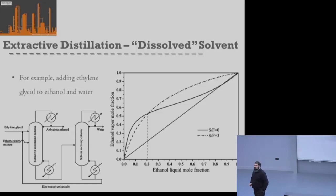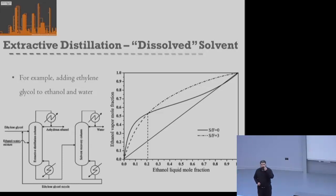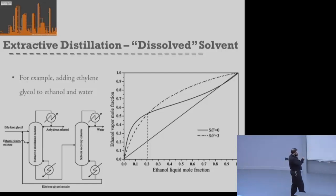So we add ethylene glycol into our first column, separate ethanol and water using the new dashed equilibrium, and get pure ethanol at the top. At the bottom we collect water and all the ethylene glycol solvent. Because water and ethylene glycol have different boiling points and no azeotrope between them, a second distillation column recovers pure water and pure ethylene glycol, which is recycled back to the first column. Although a high solvent flow rate is needed — about three times the feed — the recovery makes it economical.